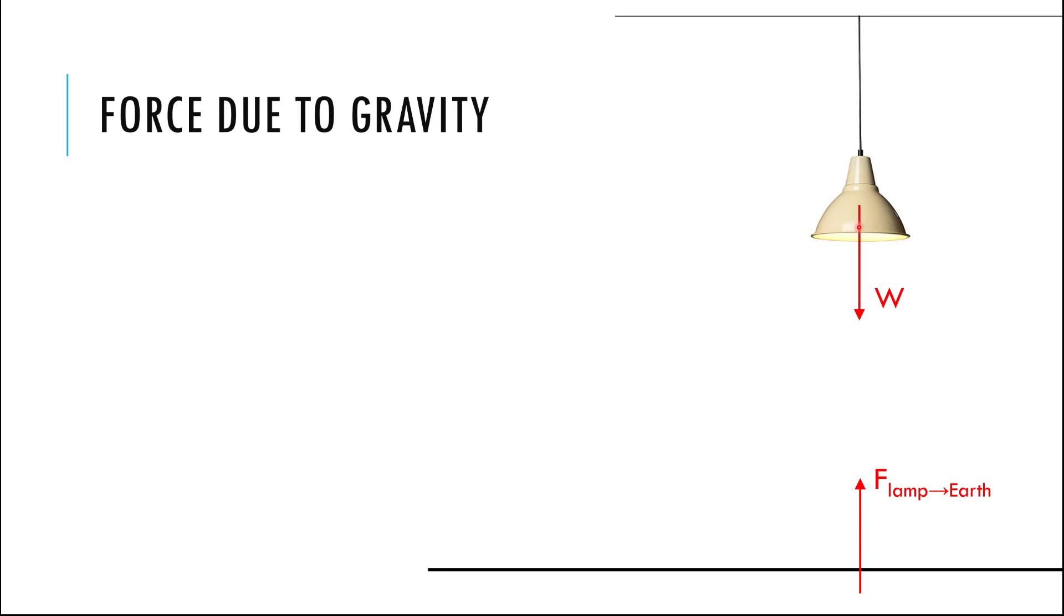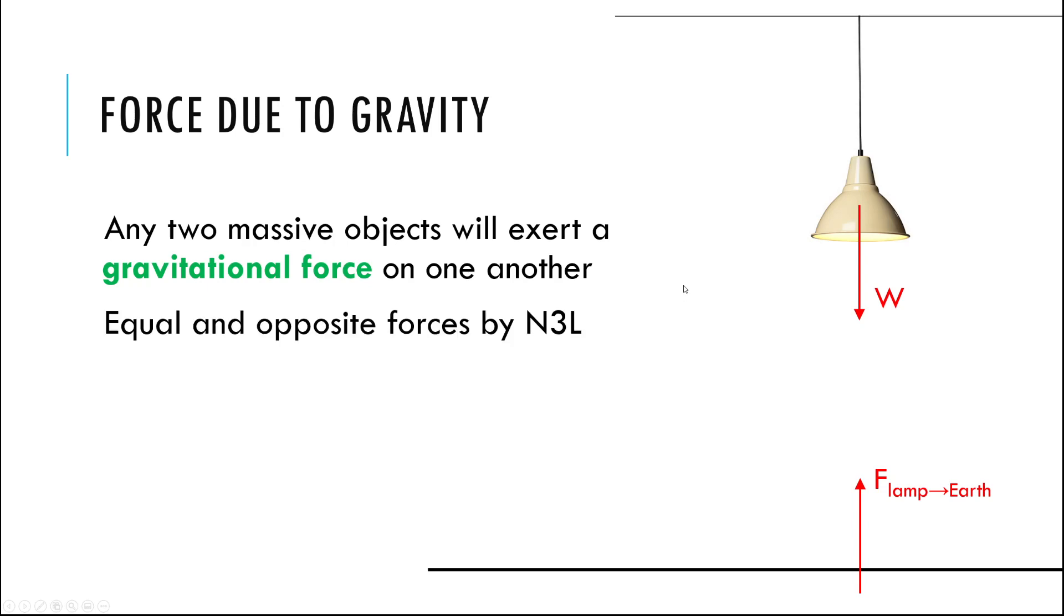It's amazing, but if this lamp is two pounds, the earth pulls down on the lamp with two pounds of force, and the lamp pulls up on the whole planet earth, all the mass of the earth, with two pounds of force. Because any two objects with mass will exert a gravitational force on each other. They will pull on each other with an attractive force of gravity. Those forces are equal in size and opposite in direction. And the size of those forces comes from the equation we're going to go into, Newton's law of universal gravitation.